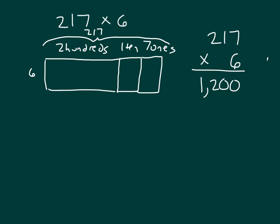Next, we have six times the one ten. And the partial product there is going to be sixty. And we'll go ahead and write that right within our area model, just like the two hundreds times the six is one thousand two hundred.